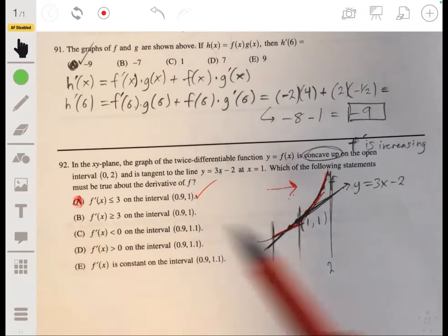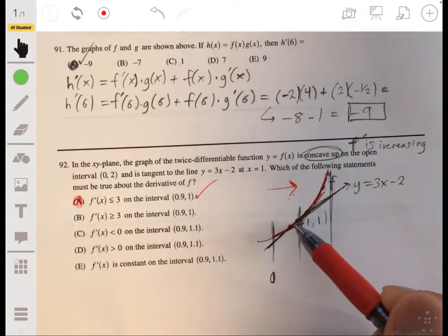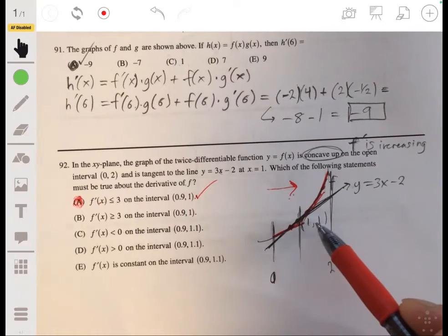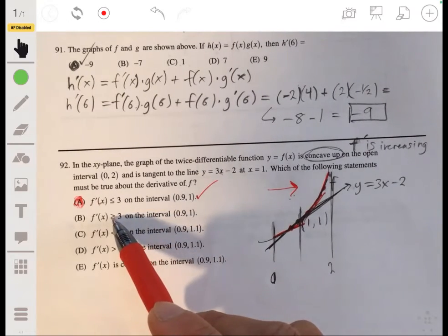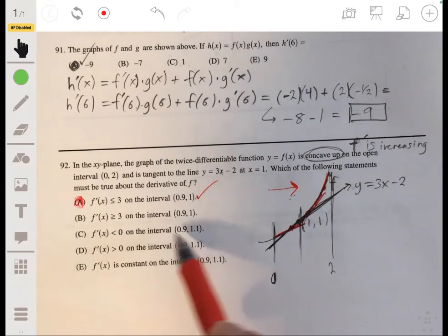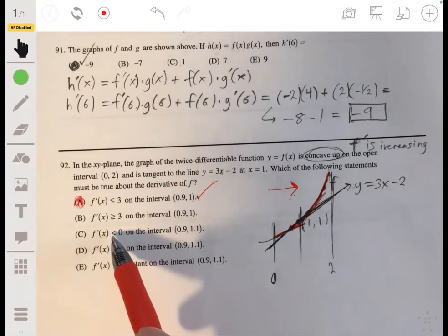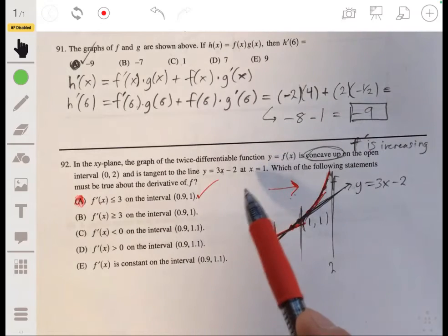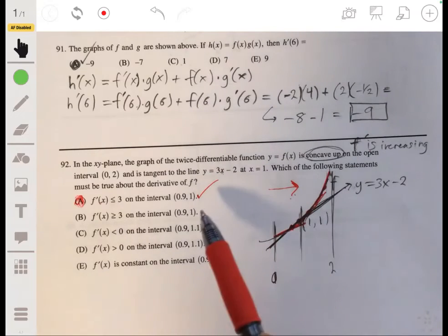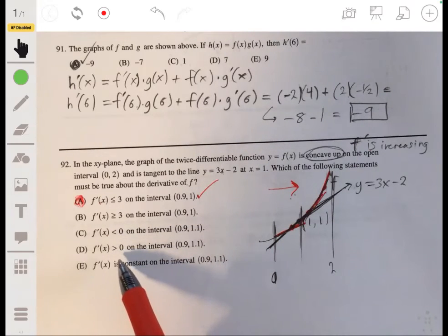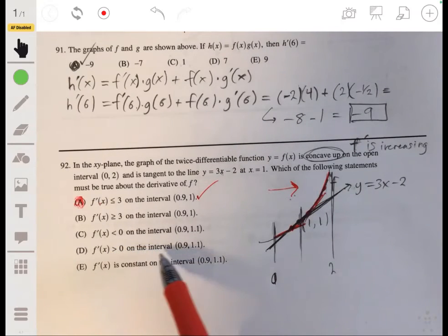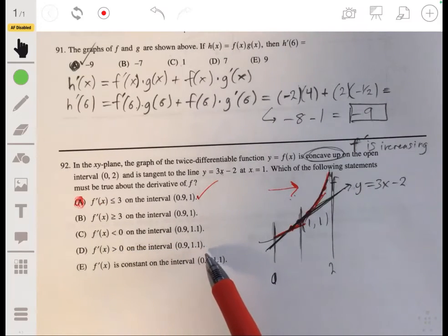f prime of x. So it wouldn't be b, because that wouldn't be concave up. Because that would violate the concept of being concave up, of concavity, because the derivatives have to increase when you go from left to right. And that would be the opposite of this. So it can't be b. f prime of x can't be negative, because it's a positive value, or the derivative is positive.